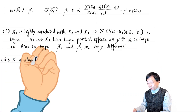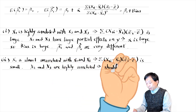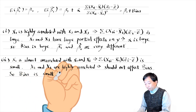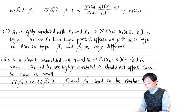For the second question: if x1 is almost uncorrelated with x2 and x3, the sample covariance between x1 and z is small. The high correlation between x2 and x3 should not affect the size of the bias, so the bias is small. The expectation of beta 1 hat is approximately equal to the expectation of beta 1 tilde, meaning beta 1 tilde and beta 1 hat tend to be similar.